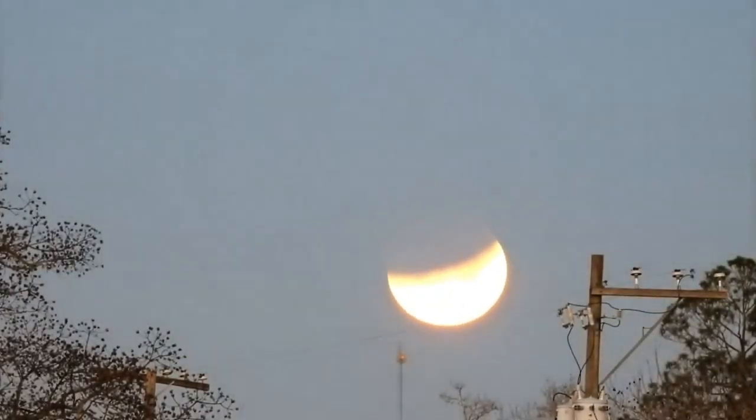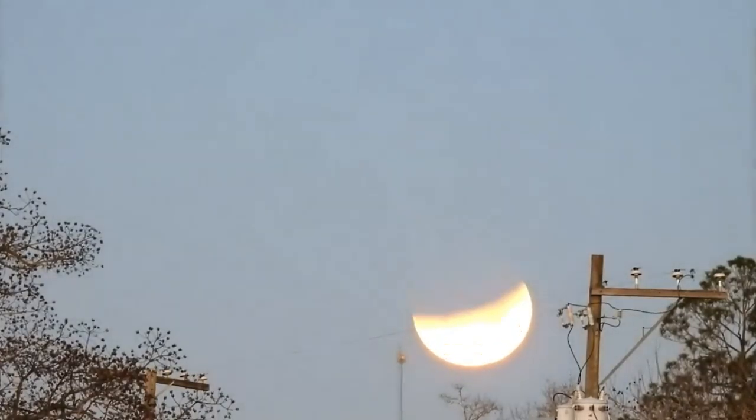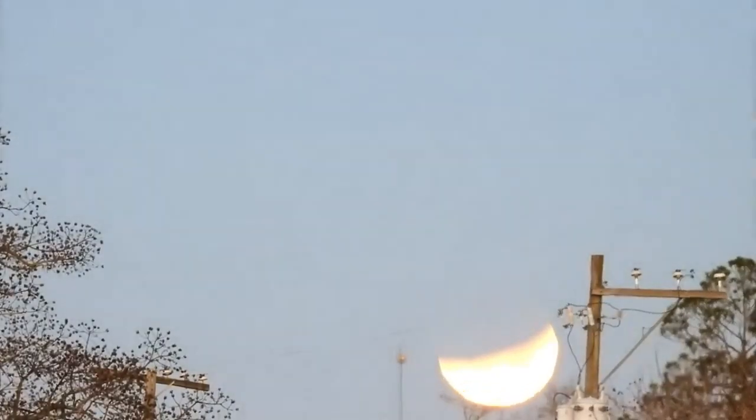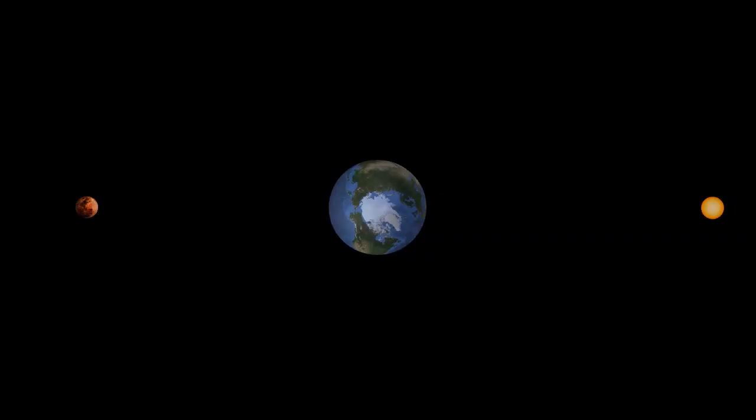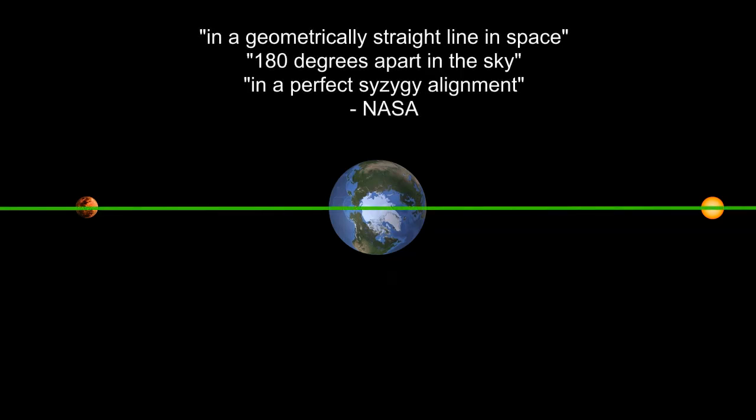So both sun and eclipsed moon were on, or at the very least, at the horizon at the same time. So here's Ron on the terminator line in Chipley, Florida. And here's his sun, earth, and eclipsed moon in a geometrically straight line in space, 180 degrees apart in the sky, in a perfect syzygy alignment.